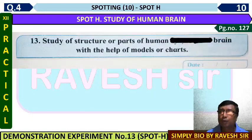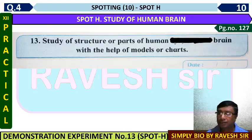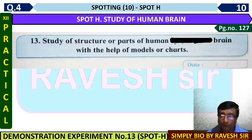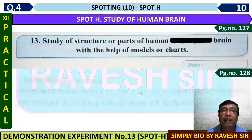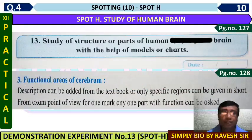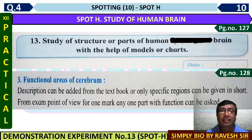On page number 127, the experiment heading is: study of structure and parts of the human brain using a model or chart, and identify functions. According to the notebook, the functional areas of the cerebrum are described there.